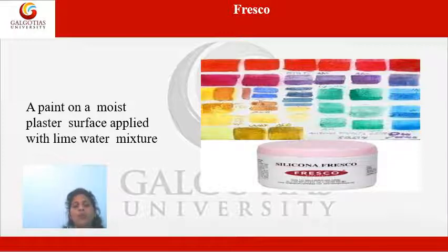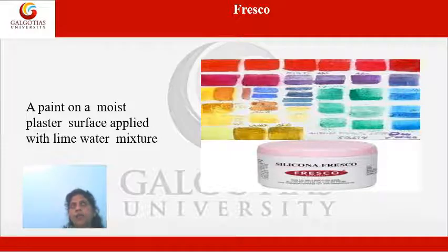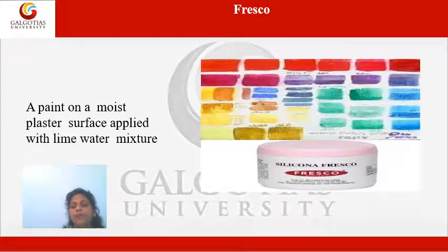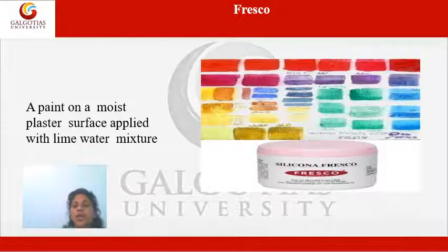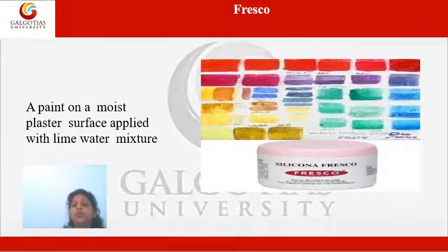Next we have fresco. Fresco is a paint on a moist plaster surface, and it is applied with a lime water mixture. Lime has the capacity to shine — girls can understand when they apply henna on their hand using a mixture of lime, water, and sugar to make the color shining and good. Same here: it gives shine and moisture. It is not easy to dry; it takes time.